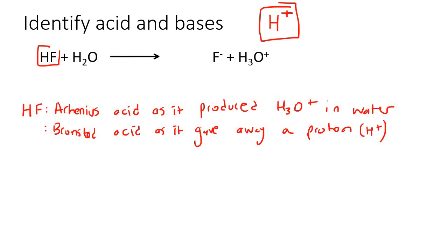Now have a look at this HF. What is it at the moment? It is neutral. But then it loses a positive proton. So that means it must become negative because it was neutral and then it gave away that positive proton.